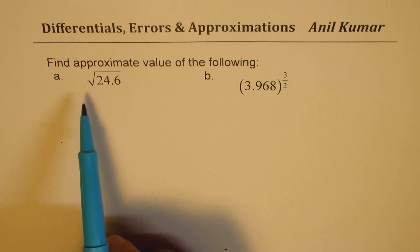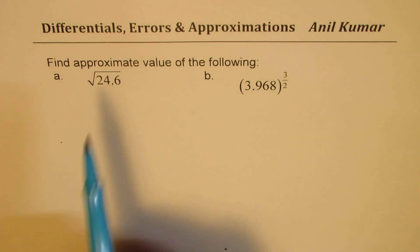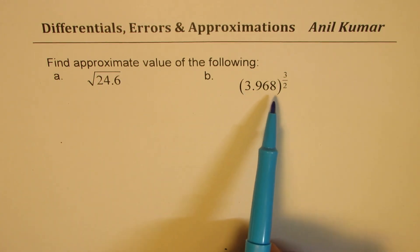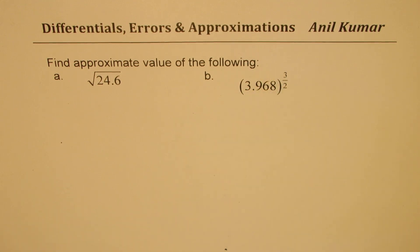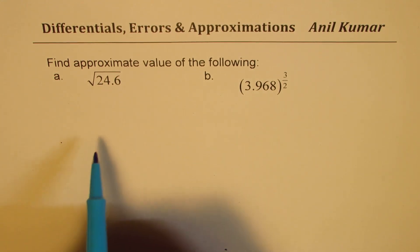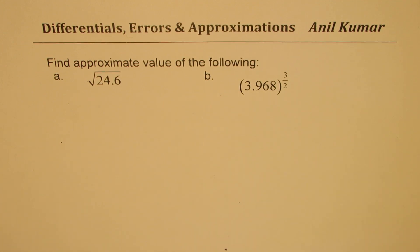We will calculate the square root of 24.6 and also 3.968 to the power of 3 over 2. Now I am going to use calculus to find this value. So let us first understand the concept. I will also provide you with a link which will give you the details of the concepts behind what we are trying to do here.